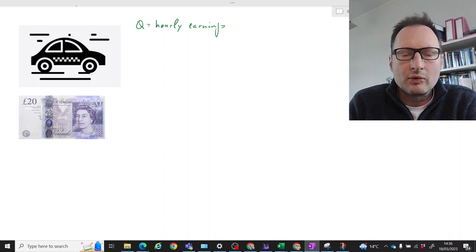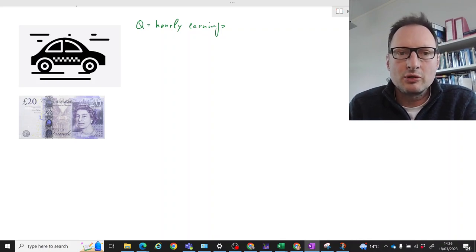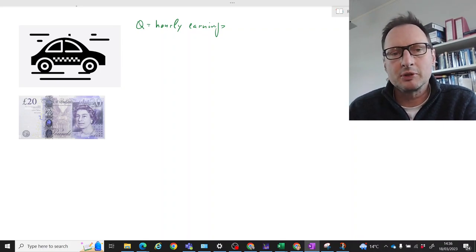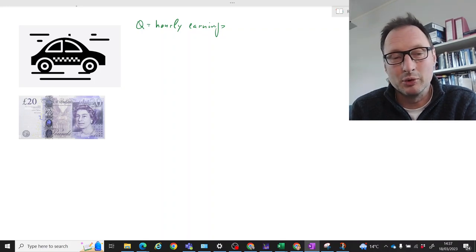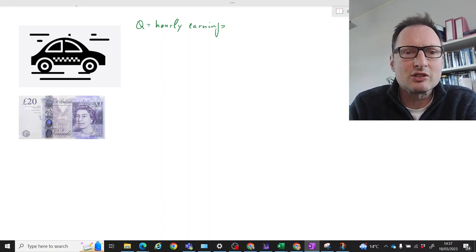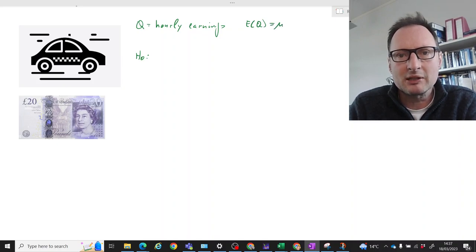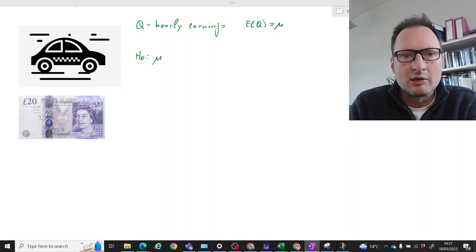Now he's concerned about two things. If they are too low, his drivers will go to another taxi entrepreneur. If they are too high, he thinks he should be charging them more. So he thinks the sweet spot is that the earnings should average - the expected value mu should equal 20 pounds - and we'll stick that into the null hypothesis.